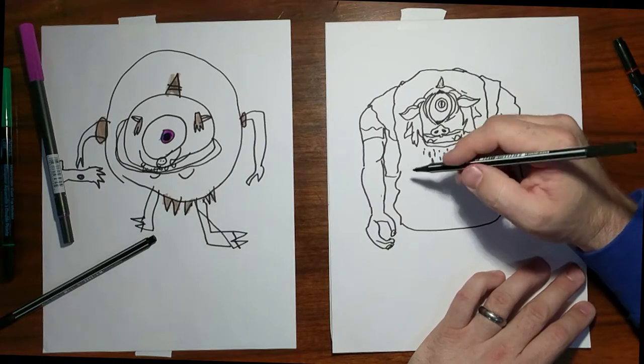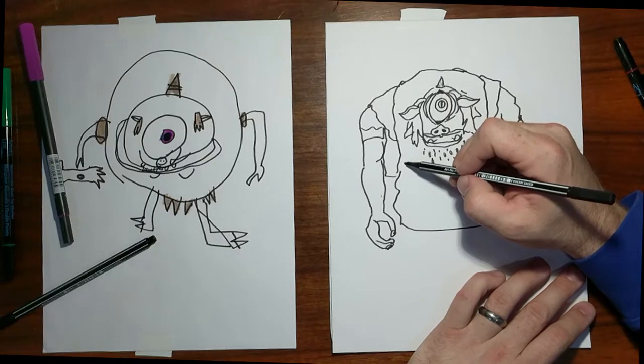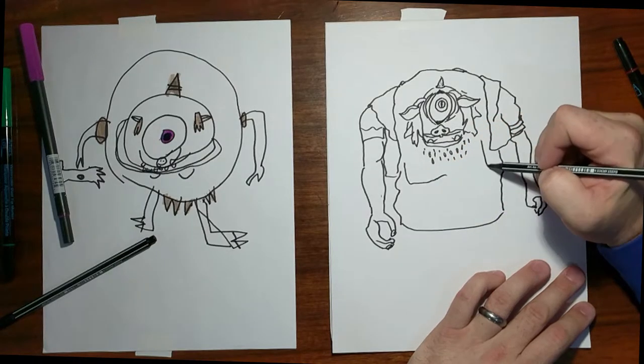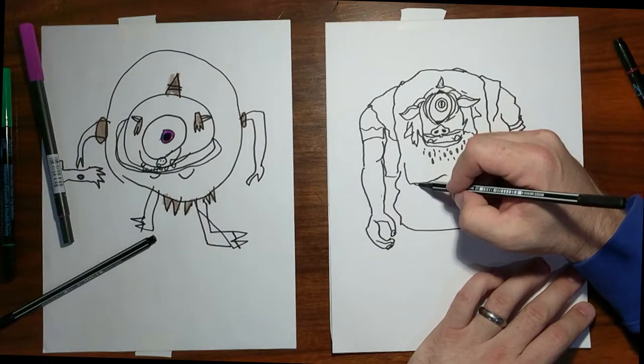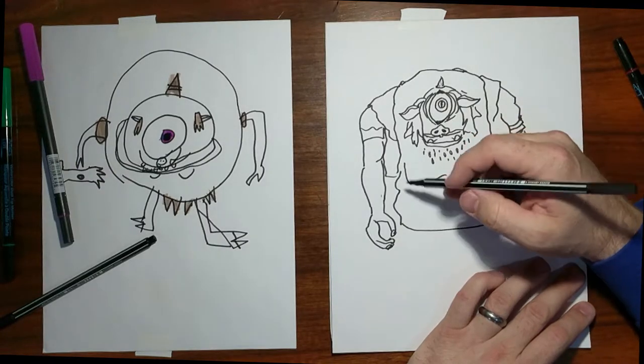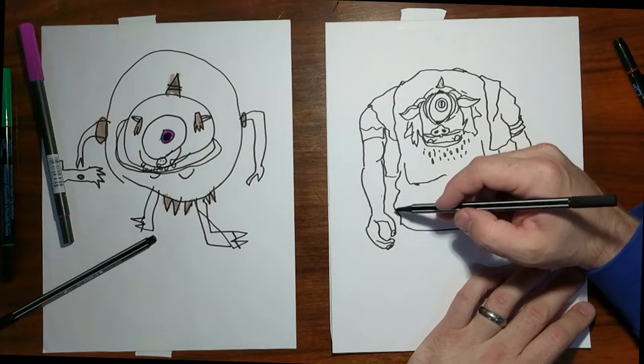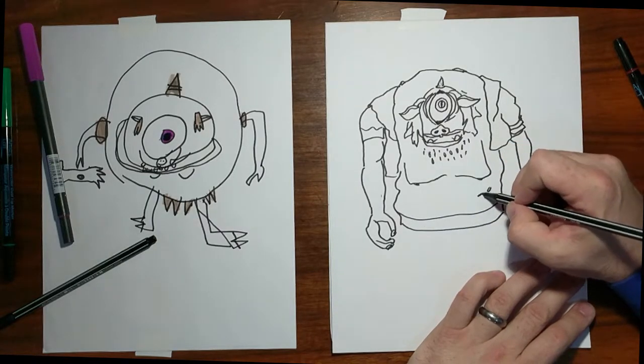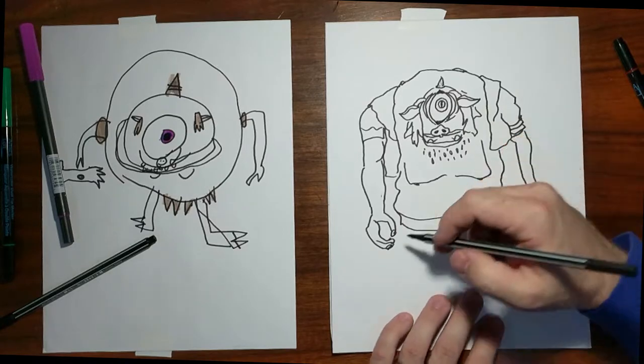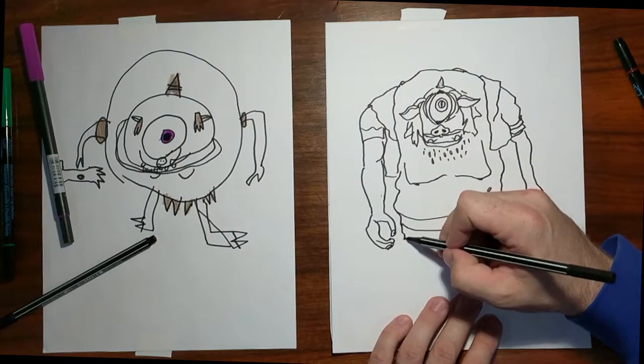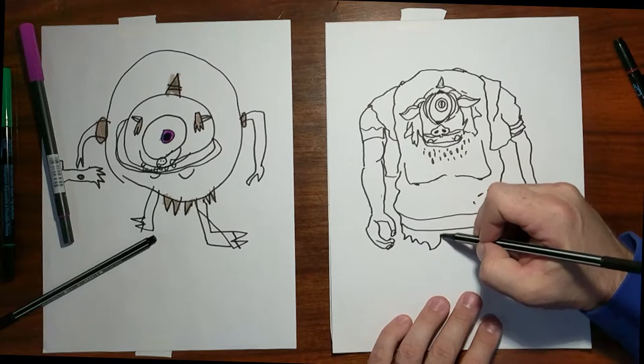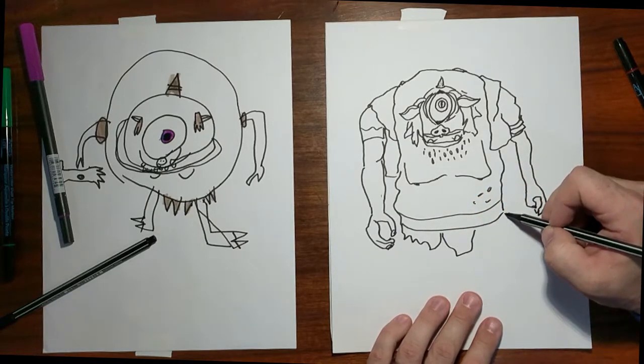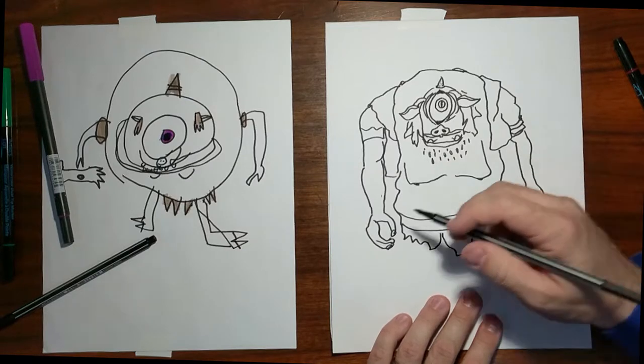All right. Now we got his pectorals here. And his kind of big, pendulous belly. We got some kind of these spots here. Loin cloth area. Okay. And then. Good.